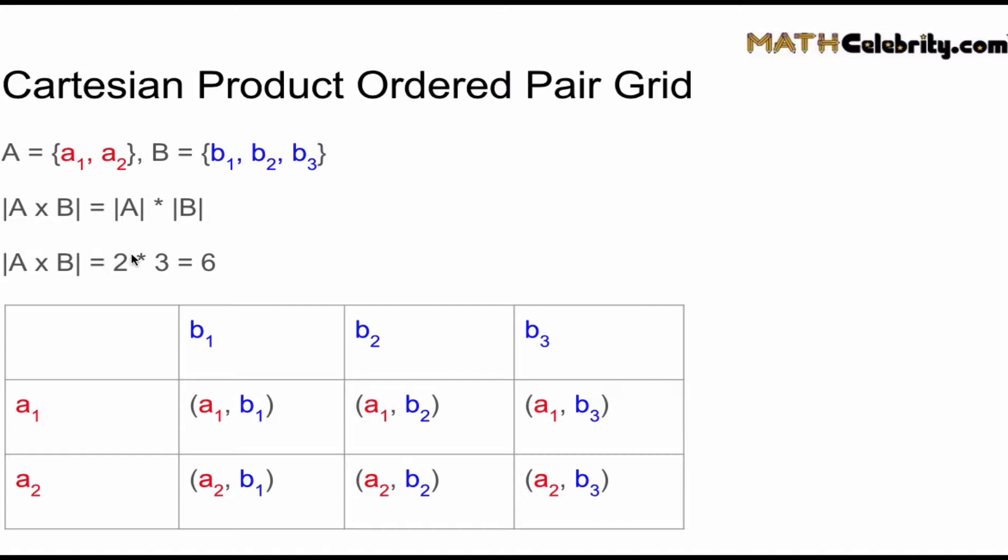two times three equals six elements inside it. The two comes from the cardinality of A—we've got two elements in set A. The three comes from the cardinality of B—there are three elements in set B.